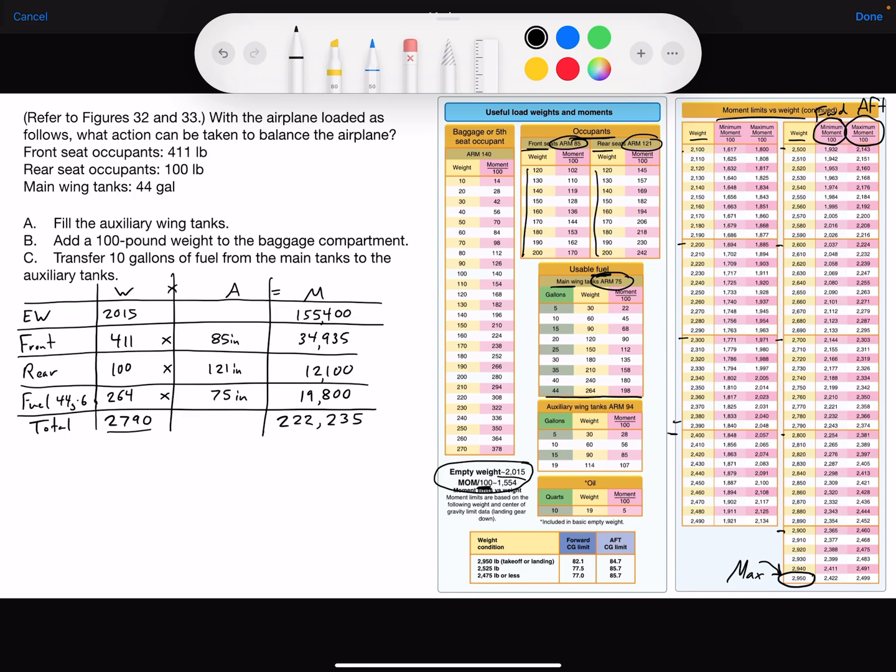And for the weight of 2,790, we can find that right here. And our moment in hundreds would actually be, let me put a decimal point right here, 2,222, which is below the minimum. Meaning our center of gravity is too far forward. We need to move stuff further aft or add weight further back in order to balance the airplane.